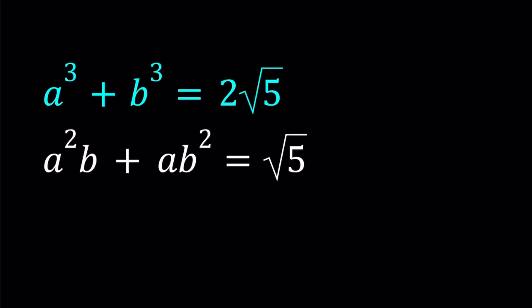Hello everyone. In this video, we're going to be solving a polynomial system. We have a³ + b³ = 2√5 and a²b + ab² = √5. We're going to be solving for a and b values.